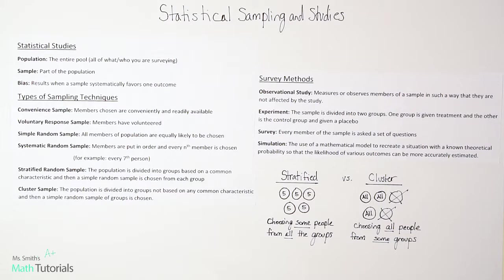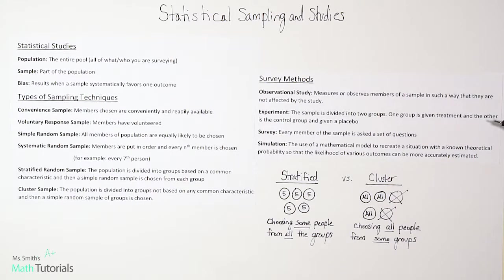There are different survey methods to talk about. An observational study measures or observes members of a sample in such a way that they're not affected by the study — you're just observing and making notes. An experiment is when the sample is divided into two groups: one group is given some type of treatment, and the other is the control group given a placebo — a fake pill where they think they're getting the real treatment but they're not.